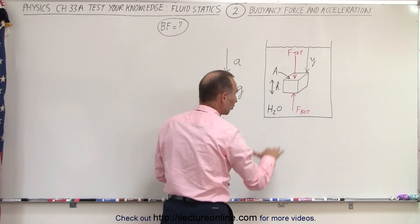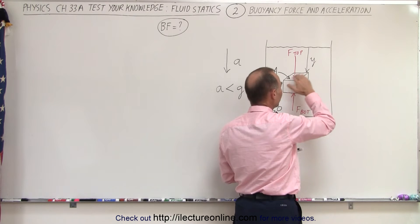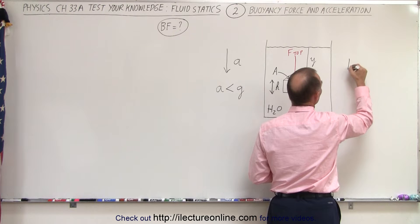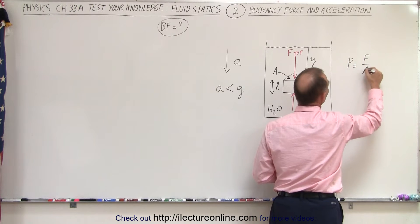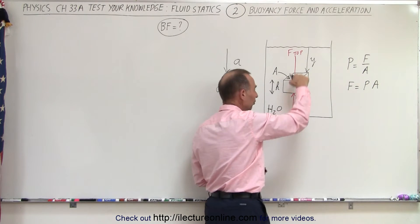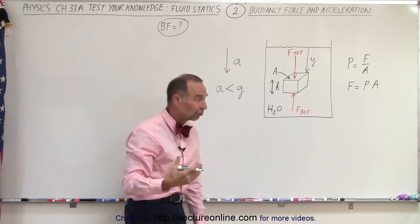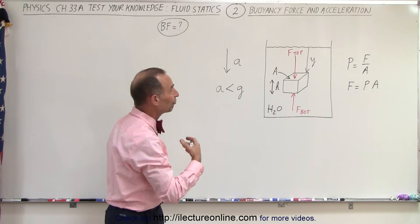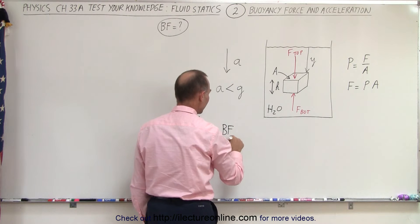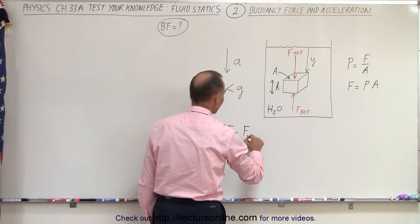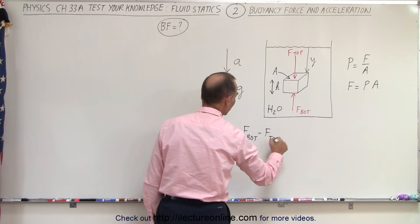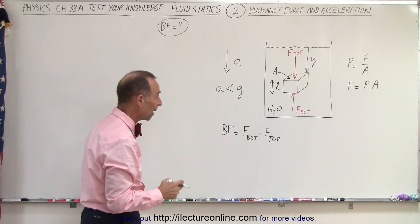For a surface below the water surface, pressure equals force divided by area, so force equals pressure times area. Therefore, when you're deeper into the liquid the pressure is greater and the force is greater. By definition, the buoyancy force — we'll write it as BF — is equal to the force at the bottom minus the force at the top, since the force at the top is smaller.